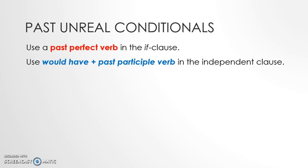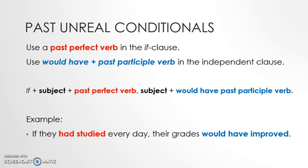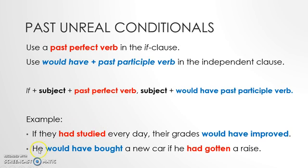So we can follow this formula. Let's look at an example: 'If they had studied every day, their grades would have improved.' In the if clause we use a past perfect verb, and in the independent clause we use 'would have' plus the past participle form of a verb. In the second example, we have the independent clause first: 'He would have bought a new car if he had gotten a raise.' We use 'would have' plus the past participle 'bought,' and in the if clause we use the past perfect verb 'had gotten.'